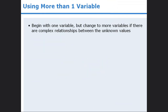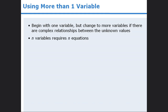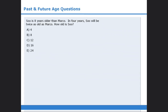As a general guideline for solving word problems algebraically, it's a good idea to begin with one variable in mind. But if the relationships between the unknown values are complex, you should consider switching to more than one variable. Just remember that if you assign N different variables, you will need to write N different equations in order to solve for each variable.